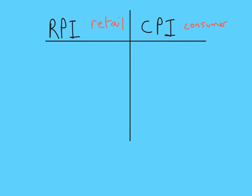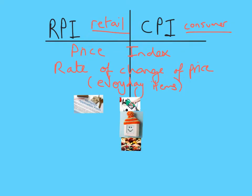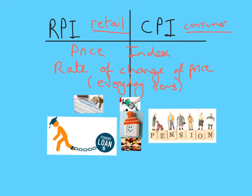The R stands for Retail and the C for Consumer, and they're both Price Index numbers, which means they're both about rate of change of price of everyday items. Some of which are the same, but one key one is different. The Retail and Consumer Price Indexes are used by the government to set different things. Hopefully you've got an idea of what these two separate price indexes are, and we'll look at using them later.